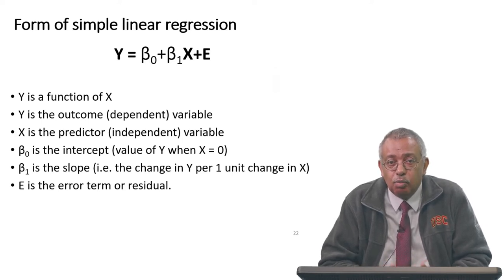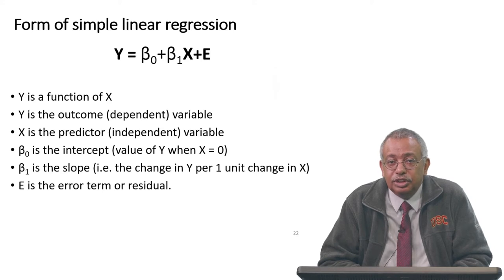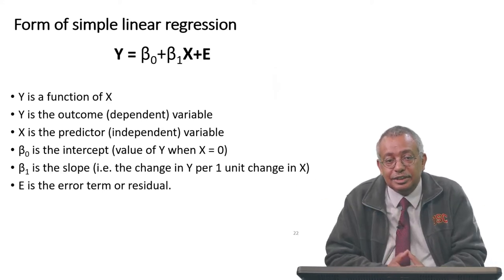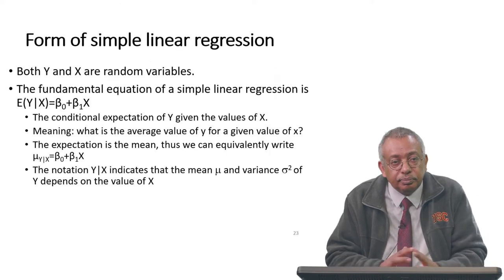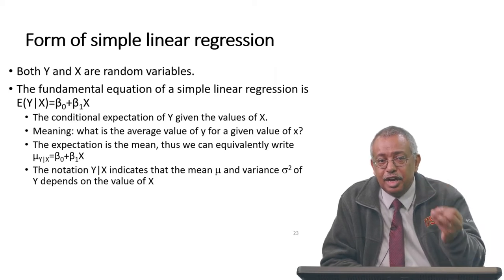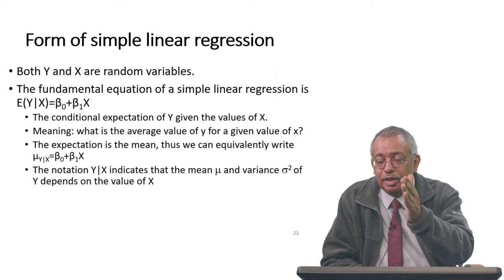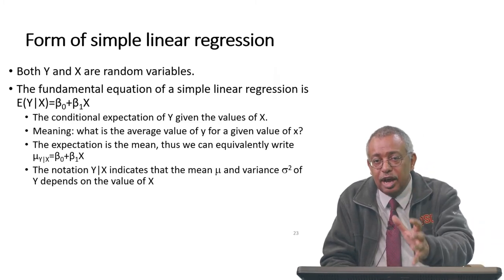In simple linear regression, you have an outcome y and a predictor x. A single predictor tries to predict the outcome y. The model has an intercept beta-naught, and a linear slope beta-1, which gives you the change in the outcome per one unit change in x. Because this is not a deterministic equation, you have an error term e — anything not explained by x is held in e, making it a stochastic model. The fundamental equation is: the expected value of y given x equals beta-naught plus beta-1 times x. The expectation of the errors is zero on average.